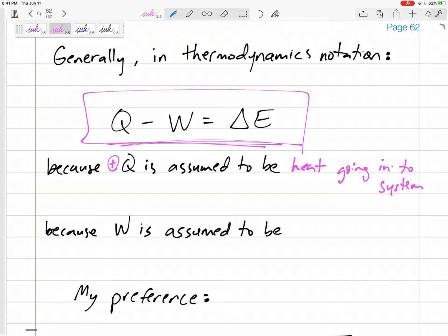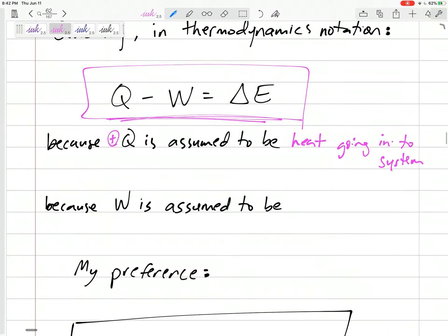Positive Q is assumed to be heat going into the system. Generally, thermodynamicists say that positive heat is heat that we're pumping into our system. Q that's crossing the boundary, going from the surroundings to our system is positive Q.